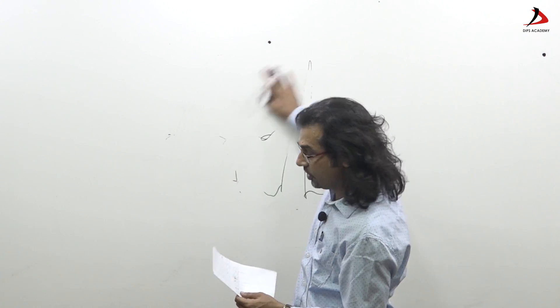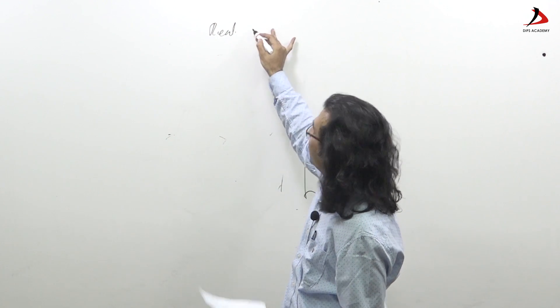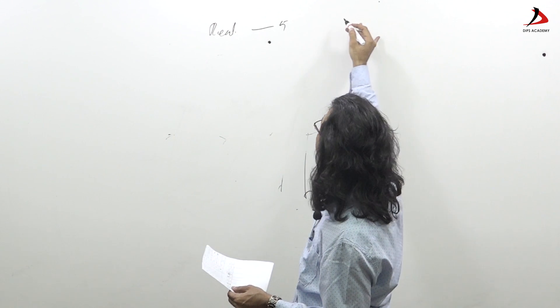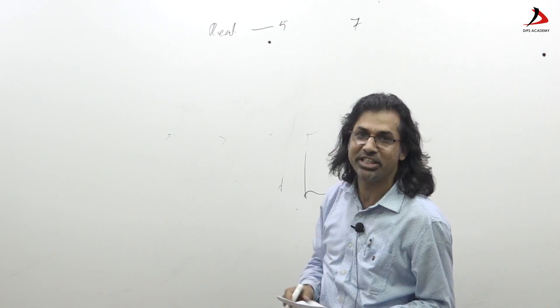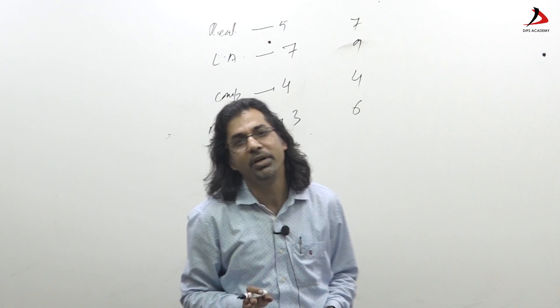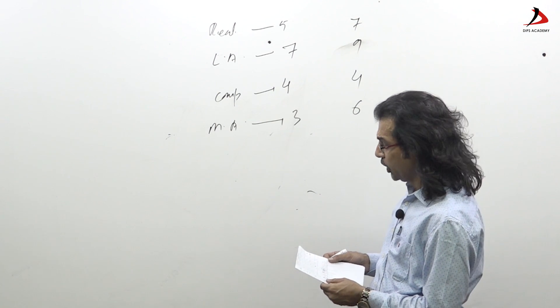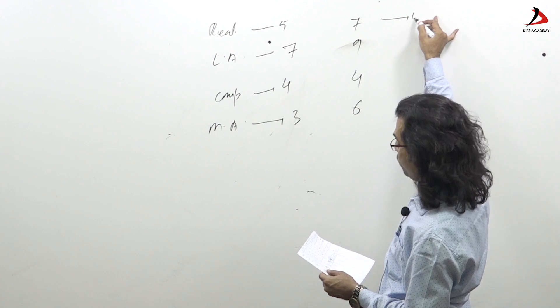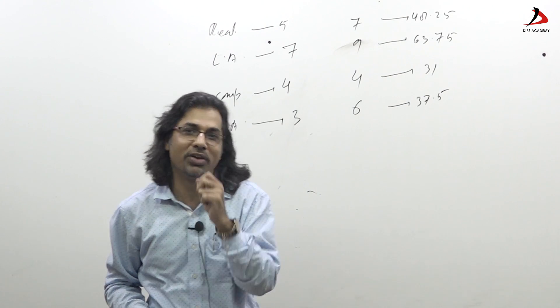In each topic, few questions are easy, few questions are difficult. Analyzing last ten years papers, it's never that every question in a particular segment was difficult. There are certain questions which were difficult, certain questions which were easy. Here I'll give you an idea - in Real Analysis there were five questions in Part B and seven questions in Part C. This is the distribution of questions.